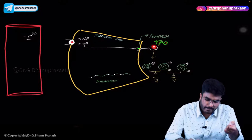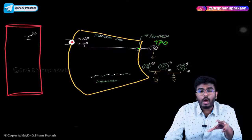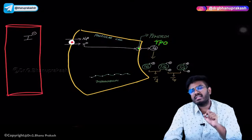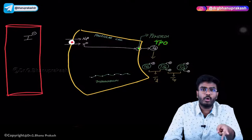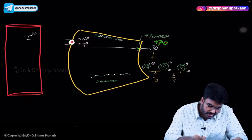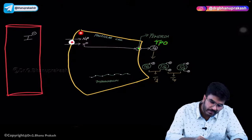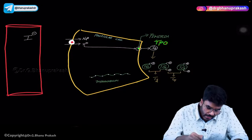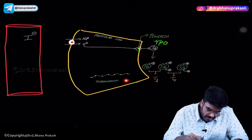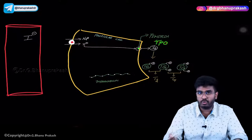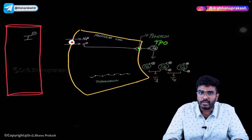This iodine needs to be organified. Before discussing organification, let me tell you about a protein called thyroglobulin. Inside the follicular cell, a protein is being produced — it is called thyroglobulin. This strand shown here is thyroglobulin. The follicular cells are the ones that produce thyroglobulin.